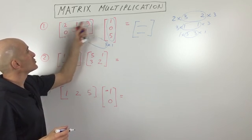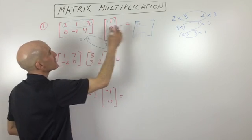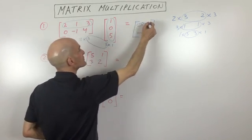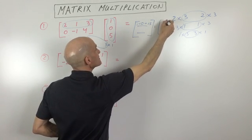So let's do this. We're going to do two times one, which is two, plus one times zero, which is zero, plus three times five, which is 15. So if we simplify that, you can see we're going to get 17.